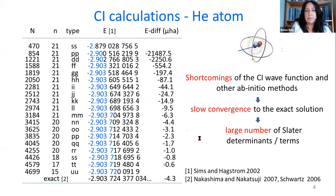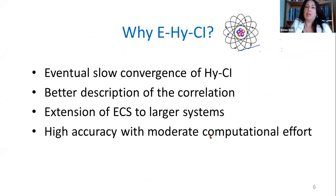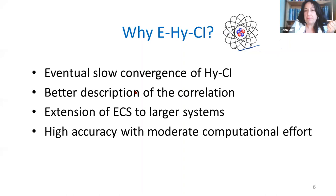Why the exponential Hylleraas CI? At very high accuracy regions of the Hylleraas CI wave function — after G or H orbitals, or 20 digits accuracy — one sees a slowdown in convergence. A second reason is that in the 1960s, Hirschfelder already proposed an exponential factor that describes well the cusp and also the decay of the wave function at large interelectronic distances. Finally, it will be possible to extend the exponential correlated Slater method to larger systems with more than three electrons, with highly accurate calculations at moderate computational effort.